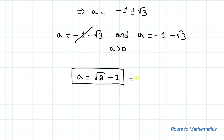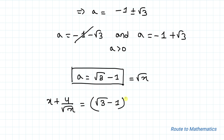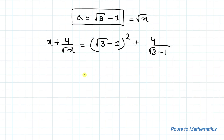We have taken a equals root x, so root x equals root 3 minus 1, meaning x equals a squared. We are asked to find x plus 4 by root x. Since x equals a squared, we can write (root 3 minus 1) squared plus 4 divided by (root 3 minus 1). Applying the algebraic identity for (a minus b) squared, this gives 3 plus 1 minus 2 root 3, plus 4 divided by (root 3 minus 1).